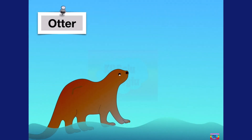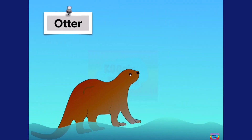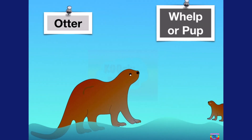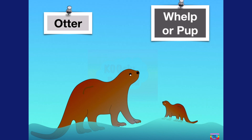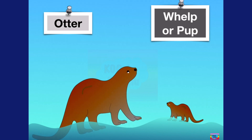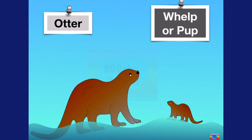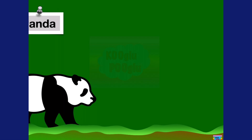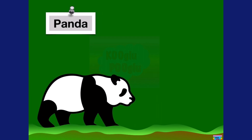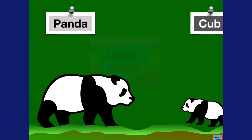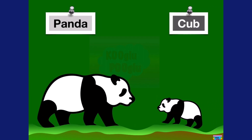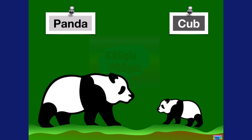Here we have an otter, and a baby otter is called a whelp or a pup. Next we have a panda, one of my favorite animals, and a baby panda is called a cub.